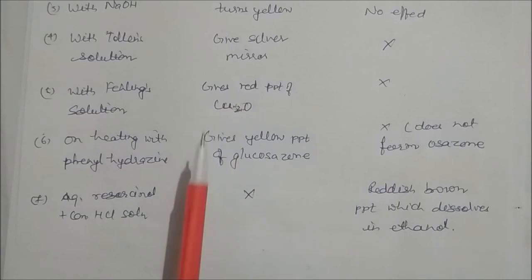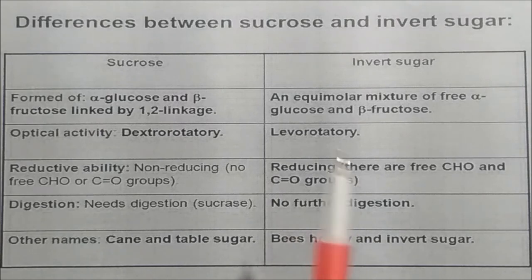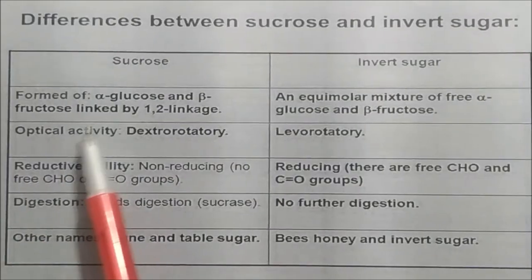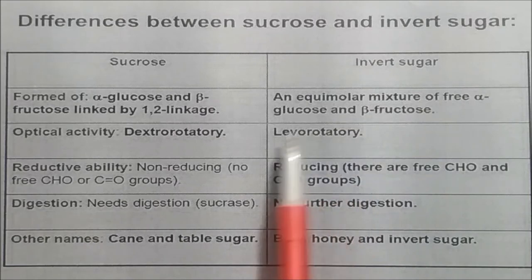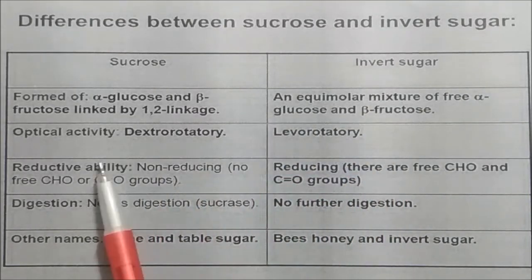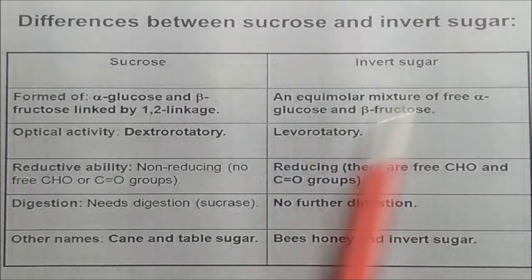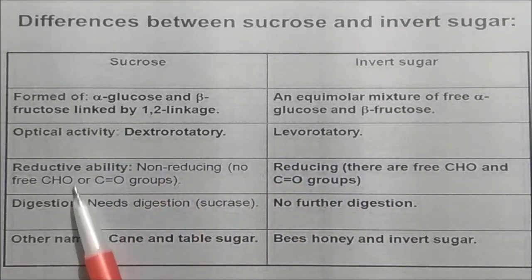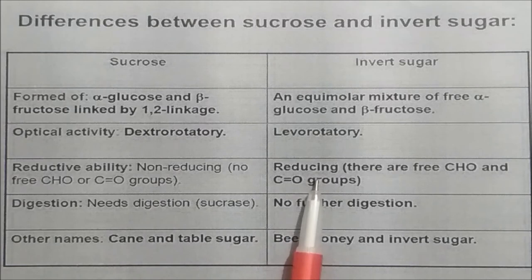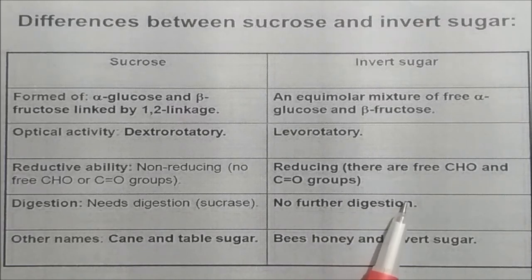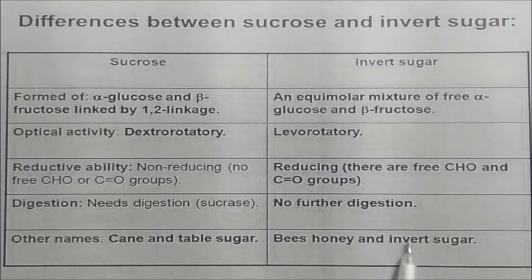Resorcinol/HCl is the key test to differentiate glucose from sucrose. Phenylhydrazine and Tollens'/Fehling's give positive with glucose and negative with sucrose. Comparing sucrose and invert sugar: sucrose is alpha-glucose + beta-fructose linked by 1,2-linkage, non-reducing, dextrorotatory, no free aldehyde/ketone group. Invert sugar is an equimolar mixture of free glucose and fructose, reducing, levorotatory, with free aldehyde/ketone groups. Sucrose requires sucrase for digestion; invert sugar needs no digestion. Other names: sucrose = cane/table sugar; invert sugar = found in honey.